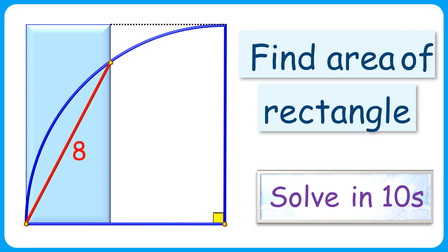Given to us is a quadrant and a rectangle with the same height as the quadrant. The length of the red line segment, which is a chord in the quadrant, is 8 centimeters. With this limited data, we have to find the area of the rectangle, and that too in 10 seconds.